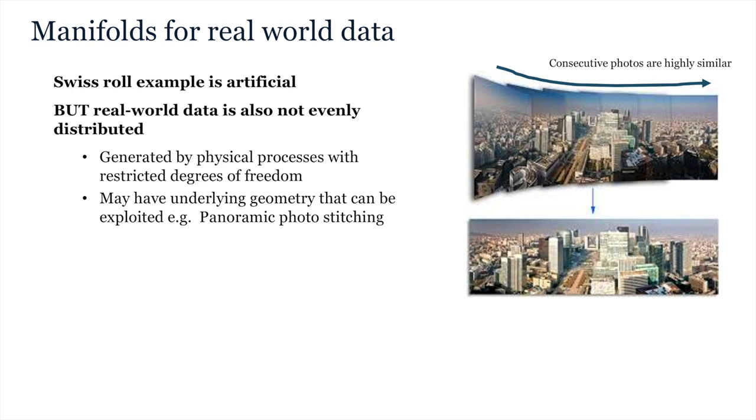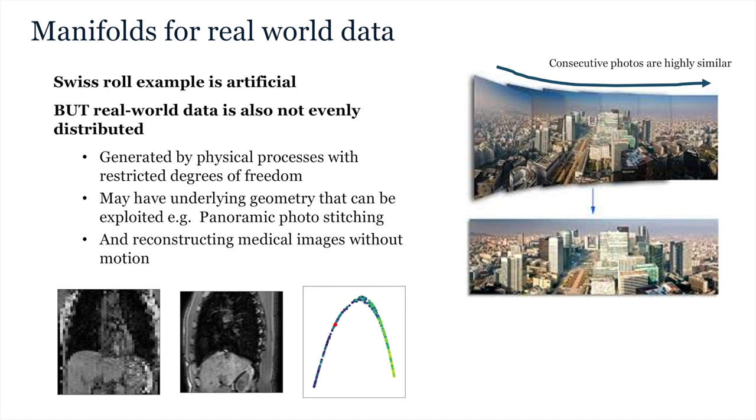Obviously, the Swiss roll simulation is quite artificial, but there are lots of reasons to think that these manifolds exist in real-world data. This is because datasets which reflect biological or physical processes are often constrained to a lower degree of freedom which reflects the laws of physics under which they were generated. For example, last week we talked about how a data set of multiple camera shots collected for piecing together into a panorama are constrained to an almost three-dimensional space which reflects the physical constraints under which the photographs were collected, specifically the rotational movement of the photographer in 3D space. Similarly, reconstruction noise from a sequence of medical images may be removed by exploiting the physical constraints of the motion.